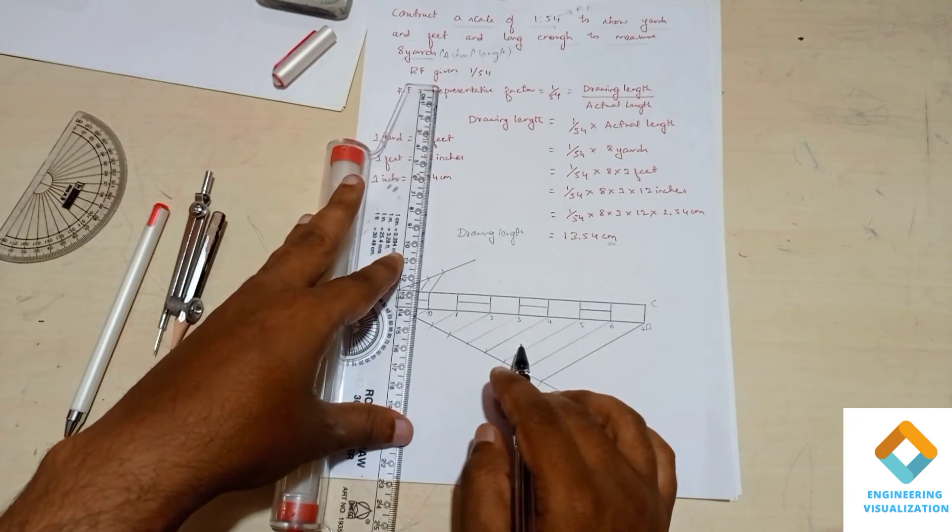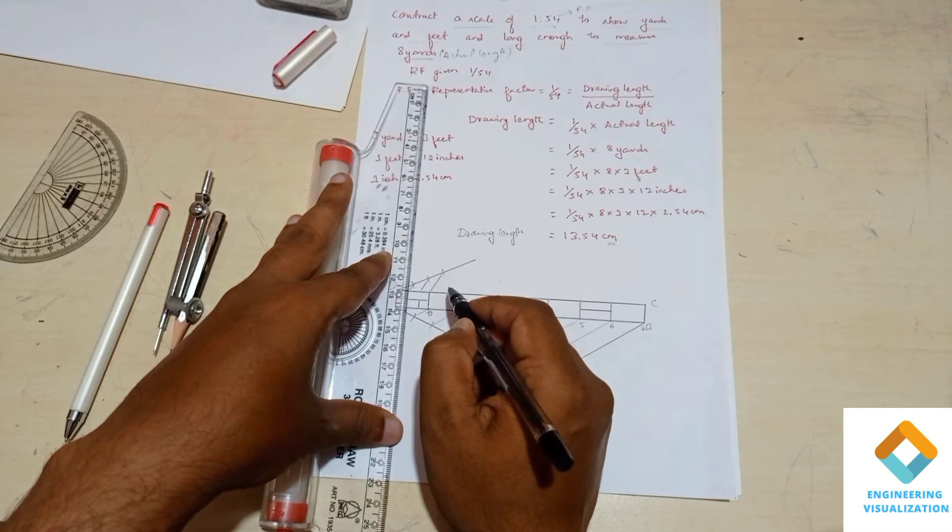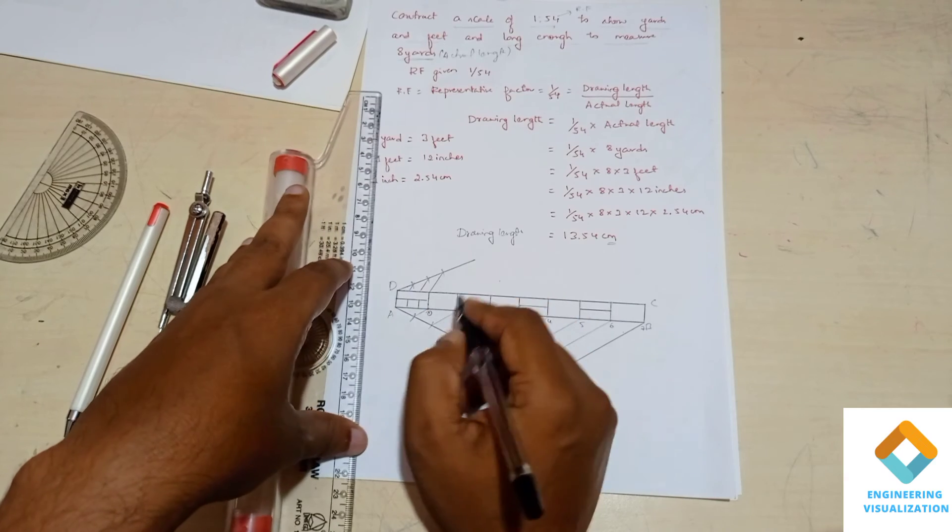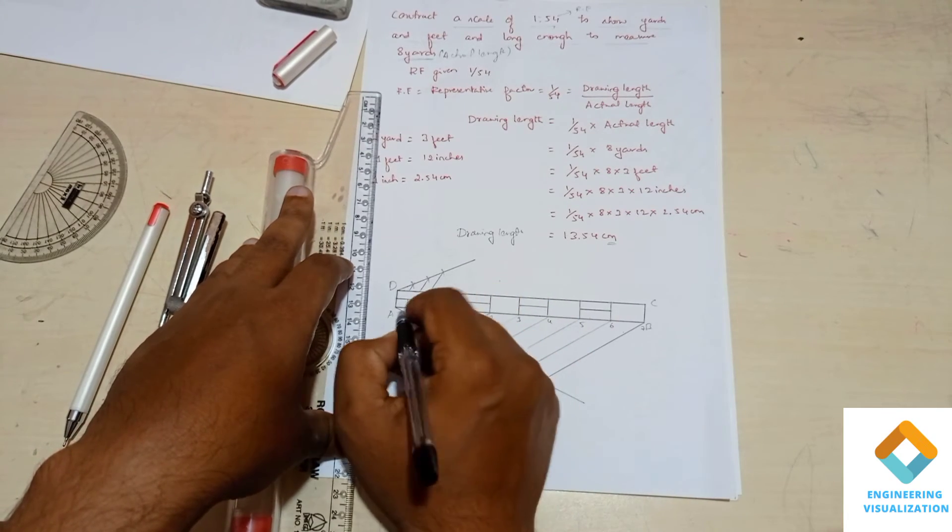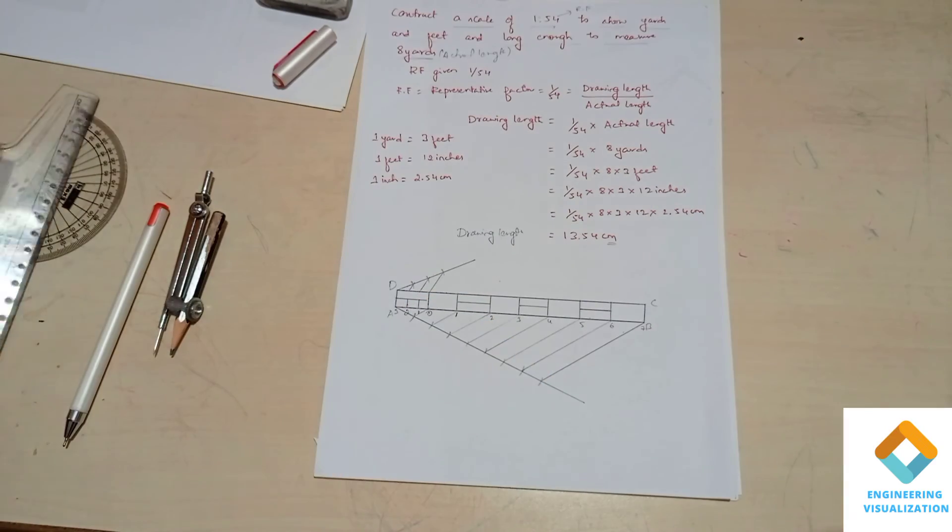Now vertically downward you draw the vertical line so this box will be divided into three equal parts. You can give here one, two, and three. Now this is what the feet here. One yard is equal to three feet.